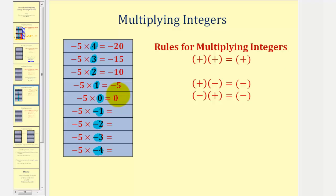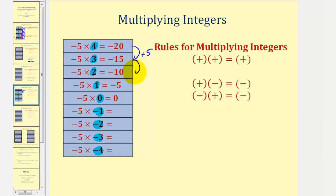By analyzing the pattern in these products, we should be able to find the remaining products where we have a negative times a negative. The products are negative 20, negative 15, negative 10, negative five, and zero. In the last table these were decreasing by five, but in this table they're increasing by five. Negative 20 plus five equals negative 15, negative 15 plus five equals negative 10, negative 10 plus five equals negative five, and negative five plus five equals zero.